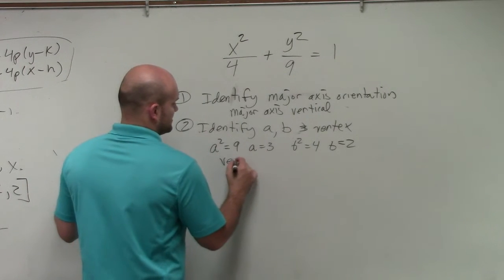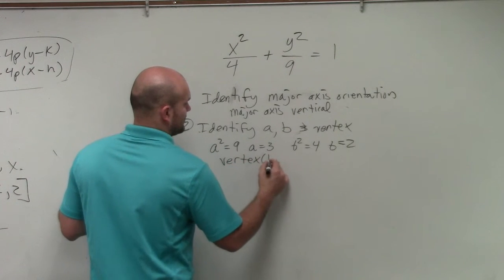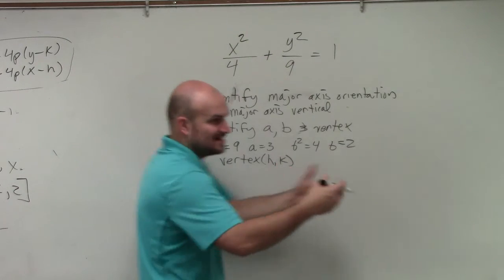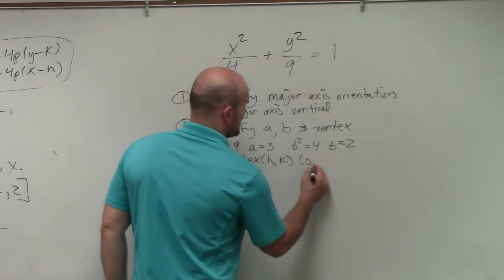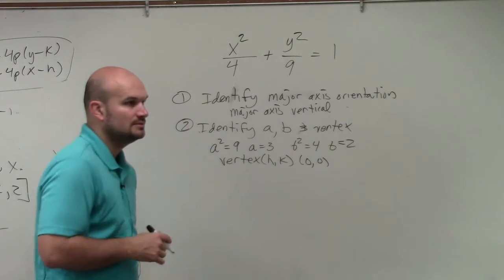And our vertex is our H, K. But remember, it's X minus H, Y minus K, right? And there's not minus anything. So this problem's not too bad. Zero comma zero. Correct?